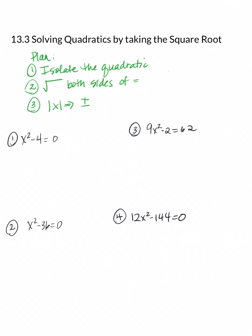Here's the game plan. First, you're going to isolate the quadratic portion of the equation. Then you're going to take the square root of both sides of the equal sign. Make yourself a note: when we solve quadratics, any time you bring in the radical to solve it, you then have to put in the absolute value bars.